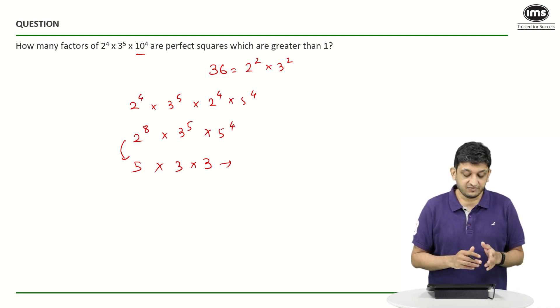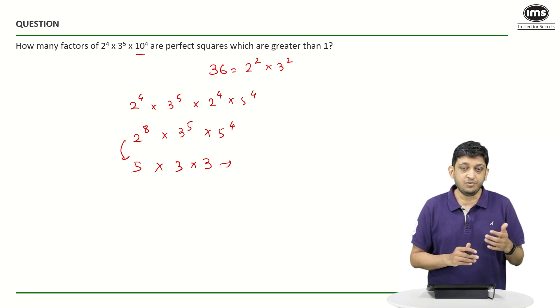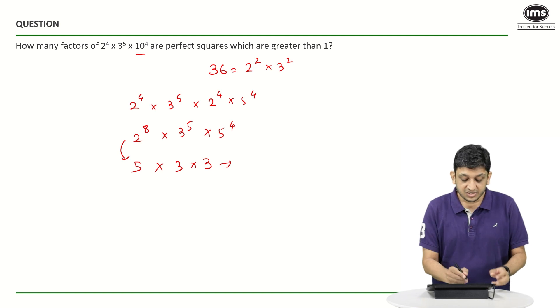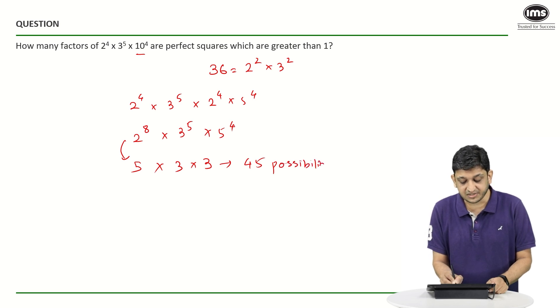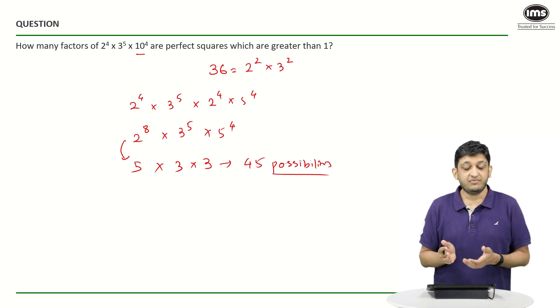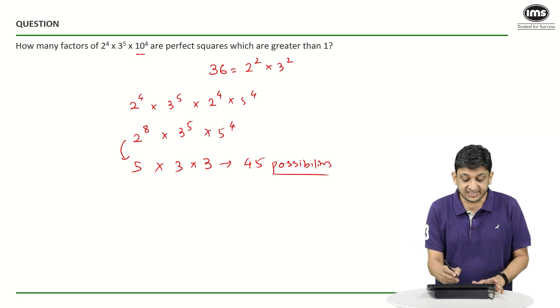Together, if you look at it, how many factors are possible? We will need an even power of 2 and an even power of 3 and an even power of 5. So together we will have 5 × 3 × 3, that is 45 possibilities. But is that our answer? The short answer is no.